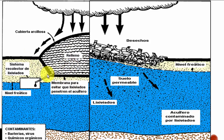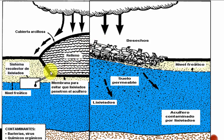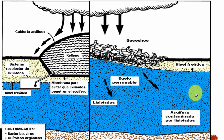Los sistemas de recolección de lixiviados, si no están muy herméticos, pueden llegar al nivel freático a través de esas mismas estructuras. En el caso de rellenos sanitarios, hay que conocer las características del recipiente y las condiciones externas e internas para mantener los lixiviados sin contaminar el acuífero. Los contaminantes en estos casos incluyen bacterias, virus, químicos orgánicos, nitratos y metales.